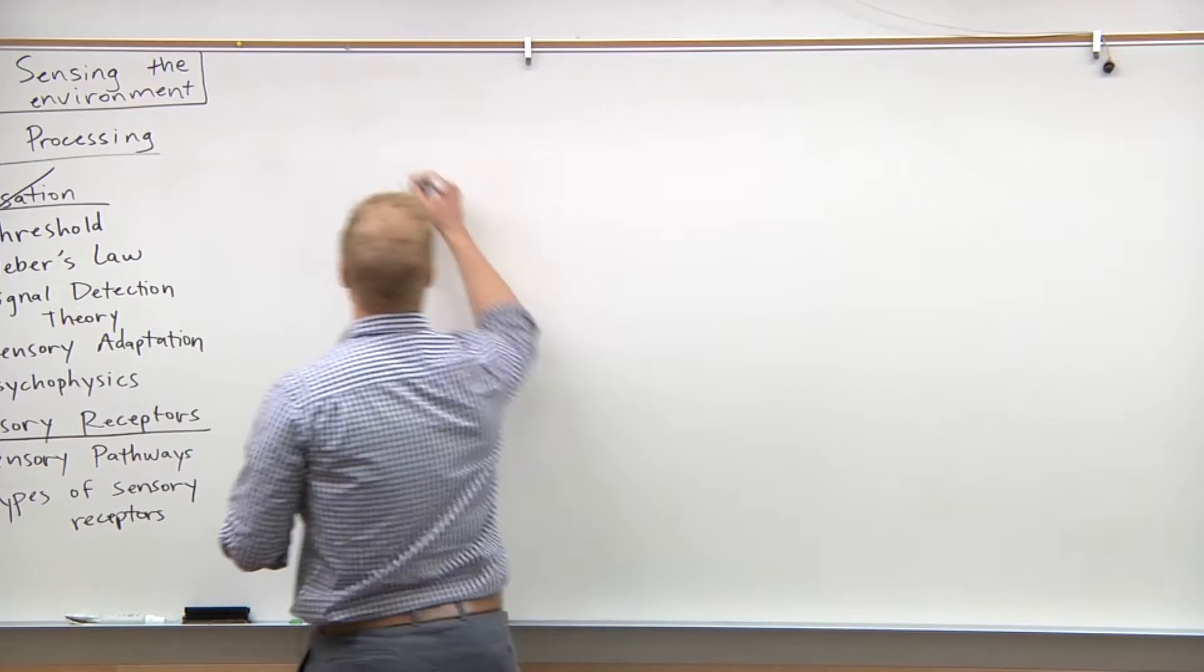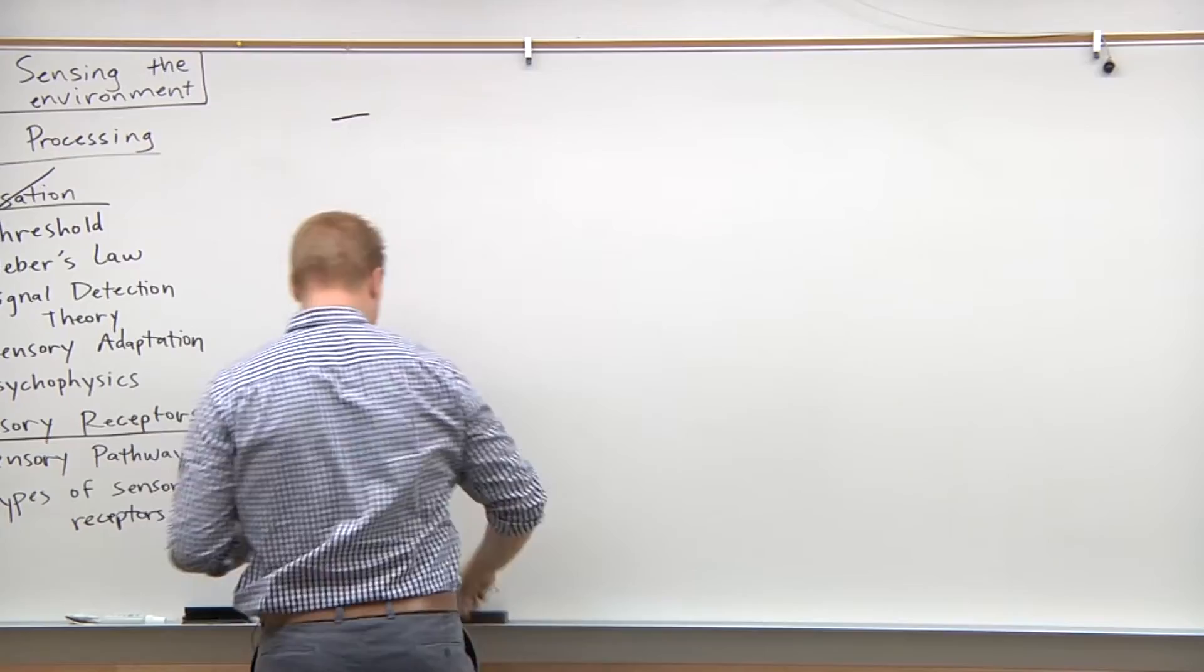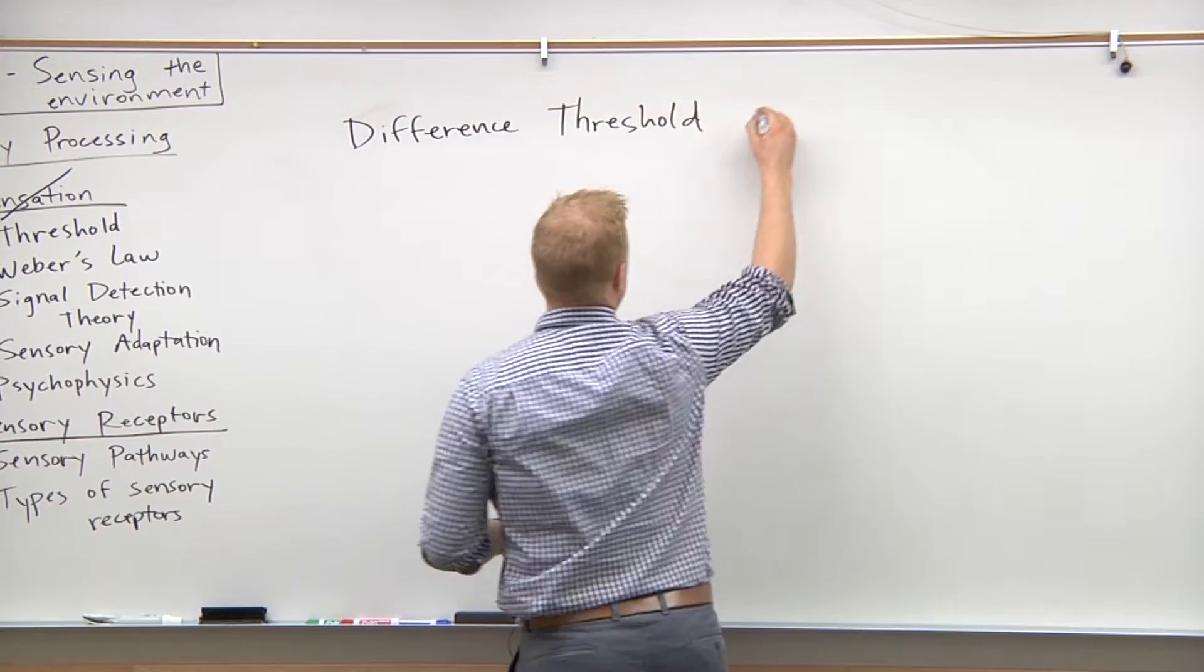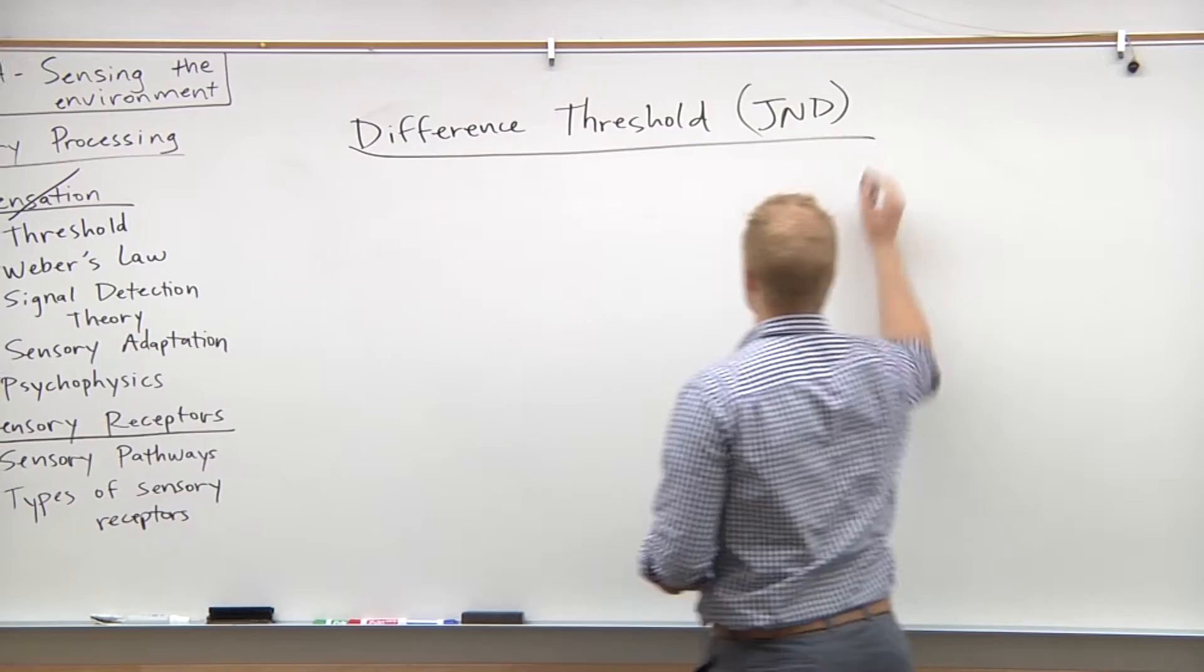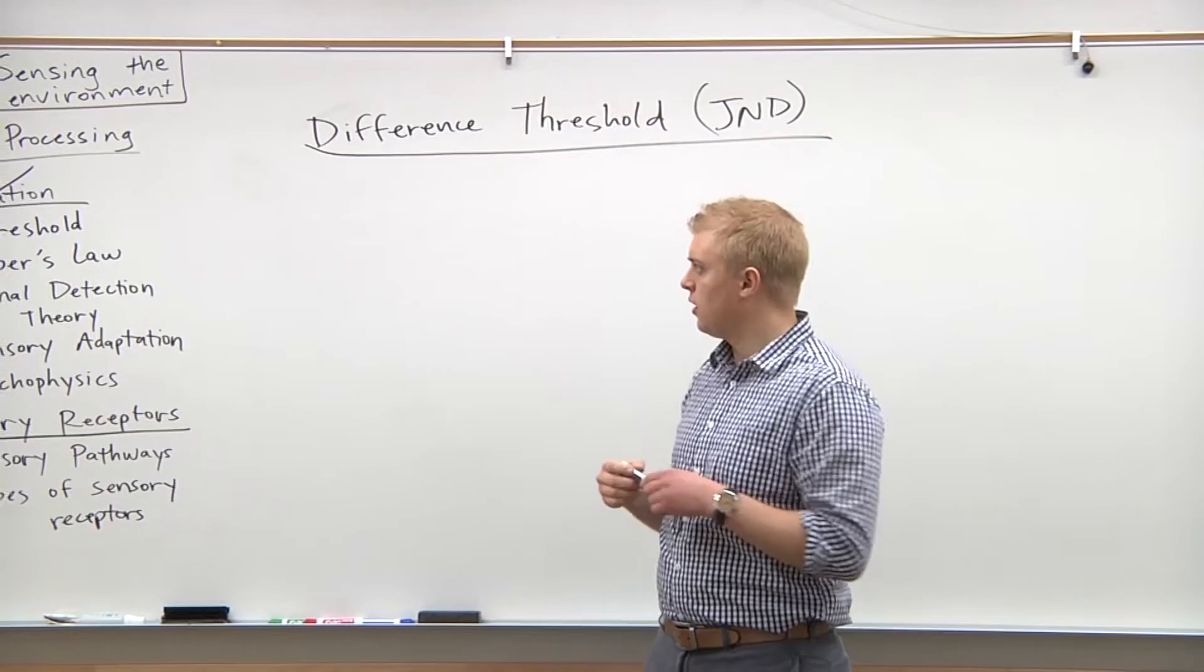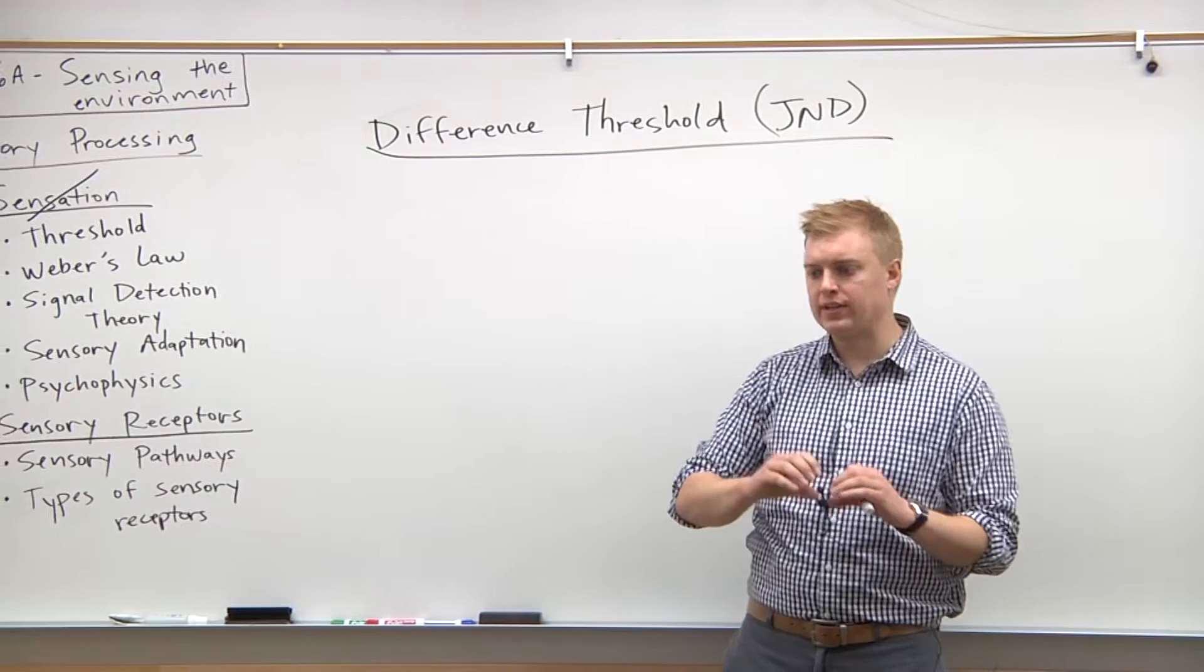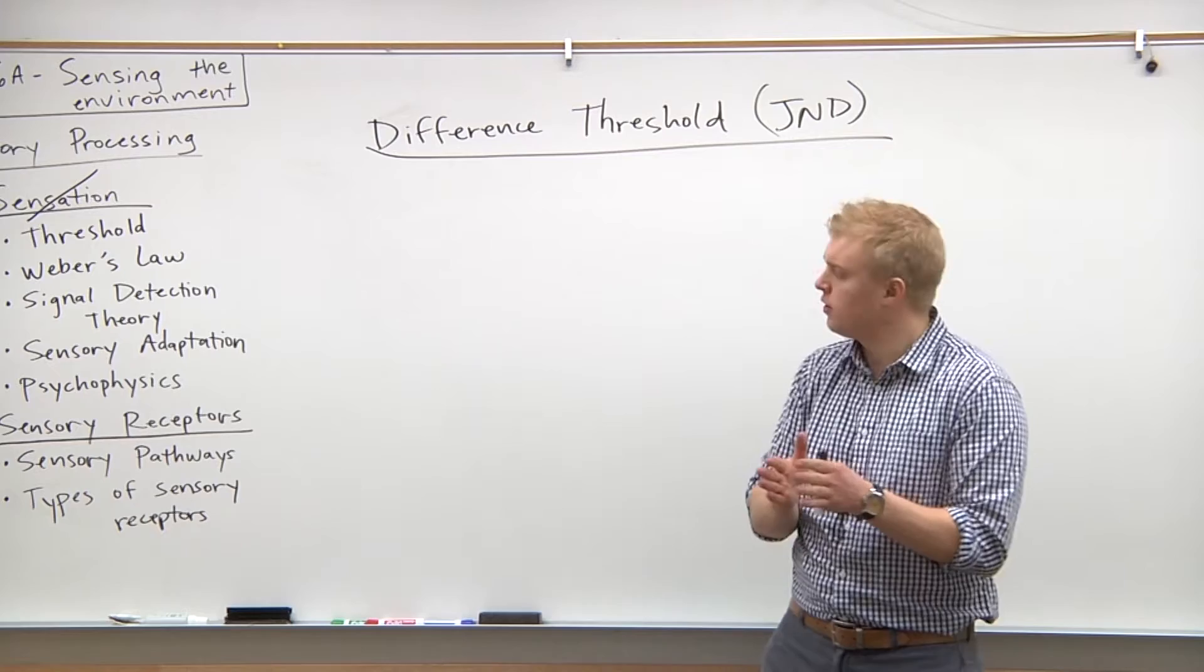One of the thresholds the MCAT will test you on is the difference threshold, which is also called the JND or just noticeable difference threshold. In contrast with the absolute threshold and the threshold for subliminal perception, the difference threshold is between two different stimuli. This basically says you have an original stimulus - what needs to be the difference in the next stimulus for you to notice that difference? If it's too small, then you won't pick that up.